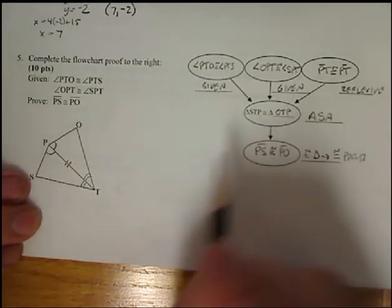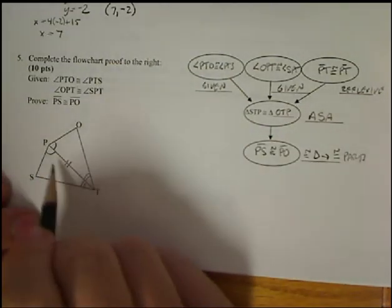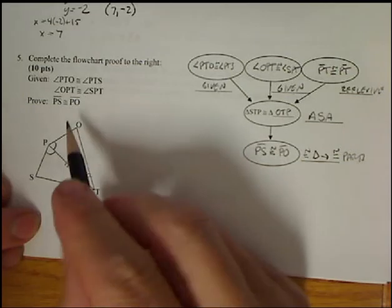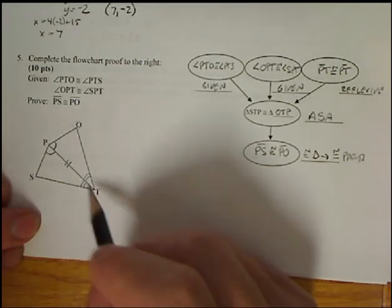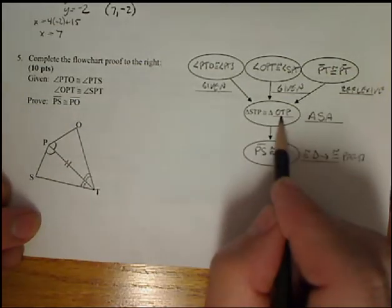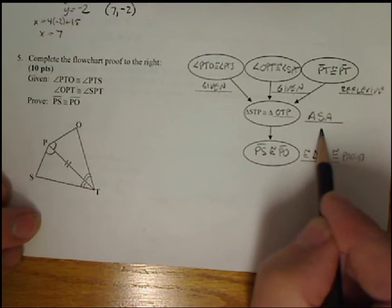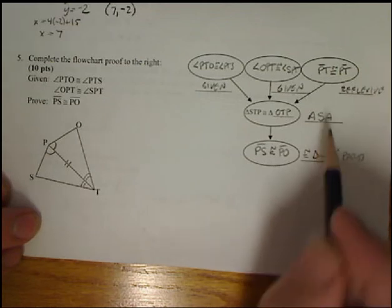So now for matching for pieces, I have triangle STP is going to match triangle OTP. That's what goes here. By angle, side, angle. And then we final step, that's what's going to go in this box right here.